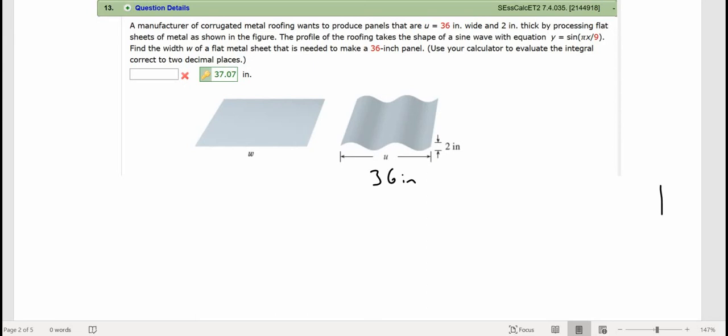And we're doing that by processing a flat sheet of metal. Now, the equation for that flat sheet of metal, and the sine wave on the side there, is y equals sine of pi x over 9.